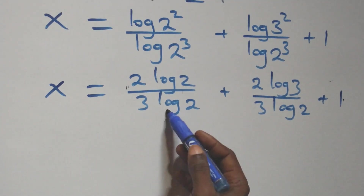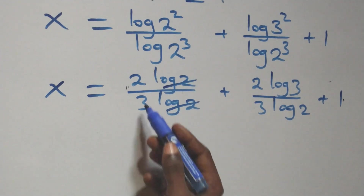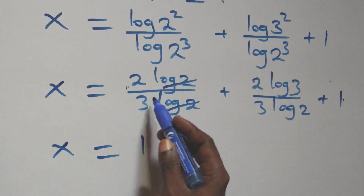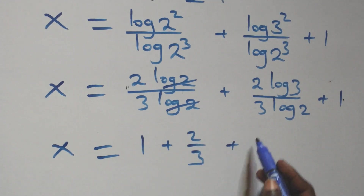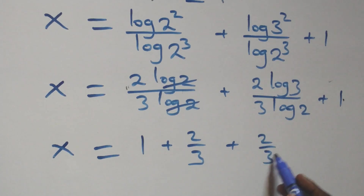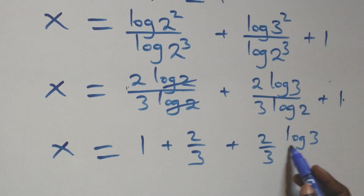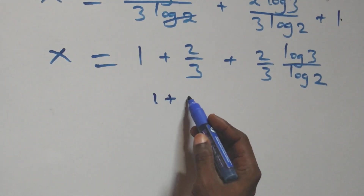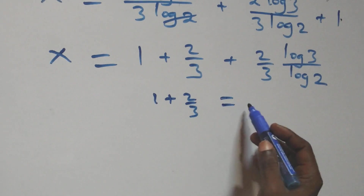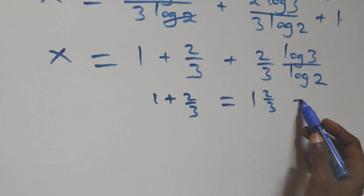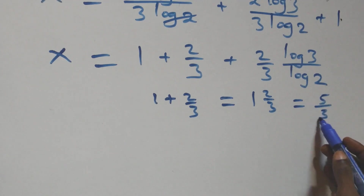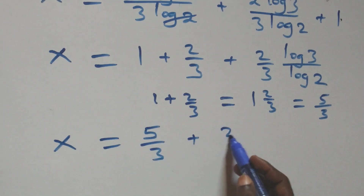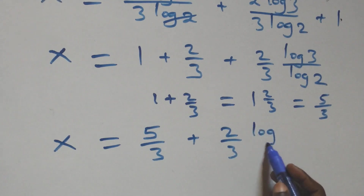The log 2 terms in the first fraction cancel, leaving 2 over 3. So x equals 2 over 3 plus 2 over 3 times log 3 over log 2 plus 1. Combining the constant terms, 1 plus 2 over 3 equals 5 over 3, giving x equals 5 over 3 plus 2 over 3 times log 3 over log 2.